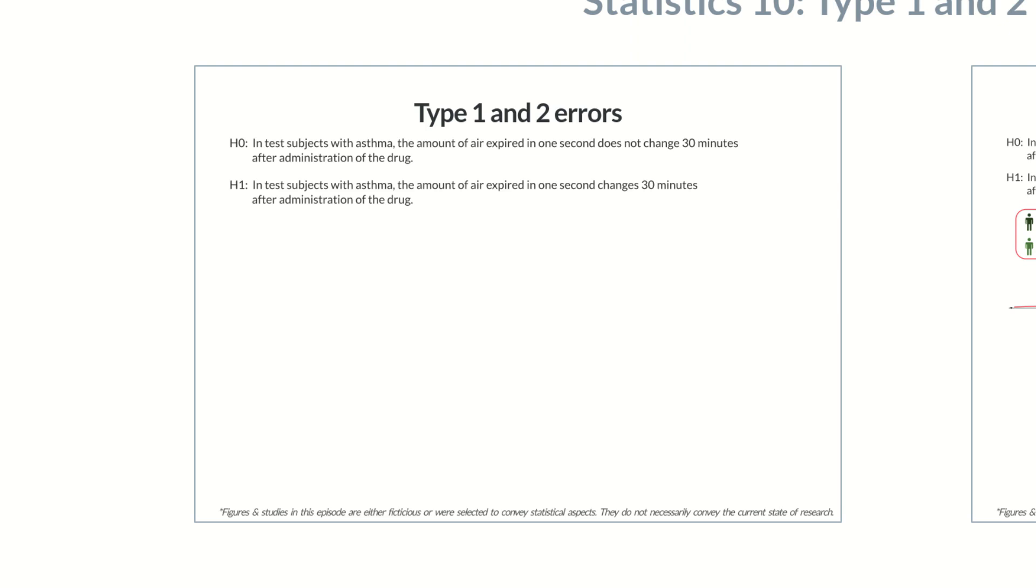As we're only speaking of a general change, the hypothesis includes both positive effects as an improvement of respiration and negative effects, such as a deterioration. Such hypotheses are non-directional, or two-tailed, because we're statistically testing both directions for a potential change.